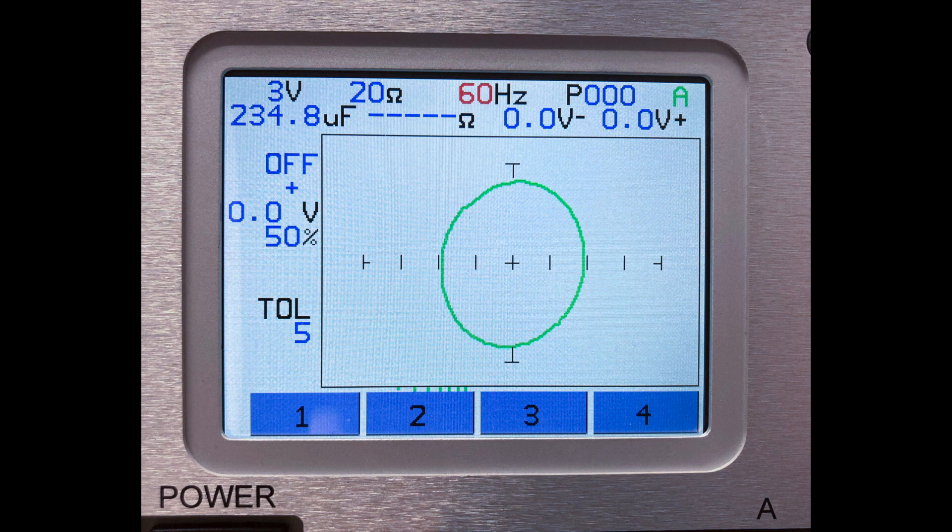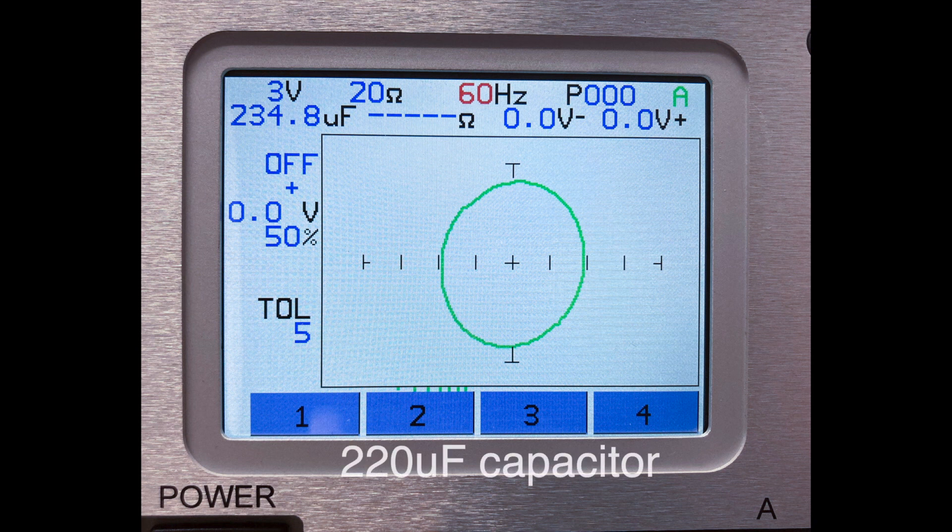With capacitive signatures, the larger the value, the lower the tracker resistance and frequency settings. Testing this 220 microfarad capacitor using the 20 ohms at 60 hertz range setting provides an even signature.